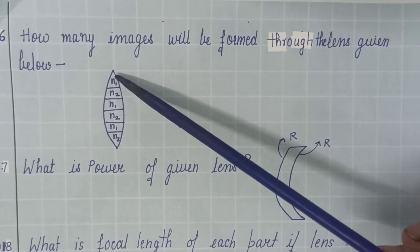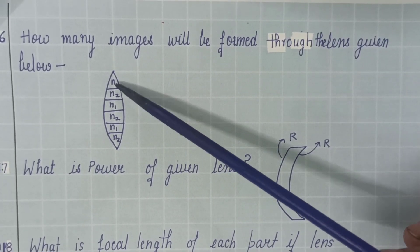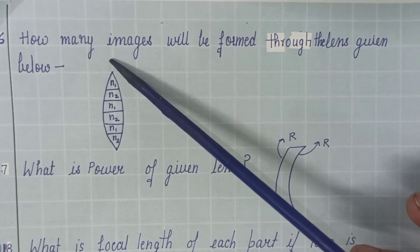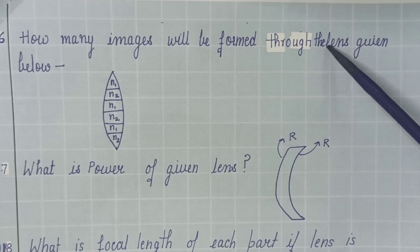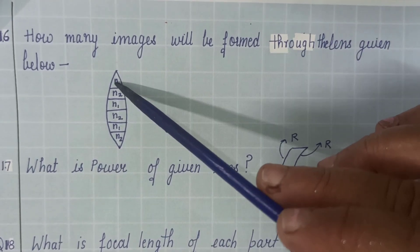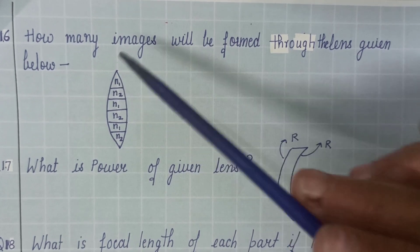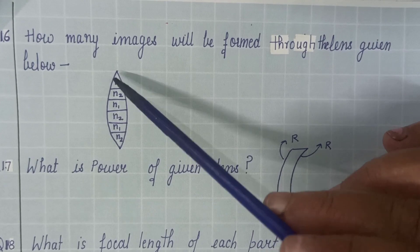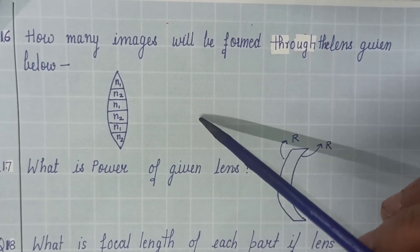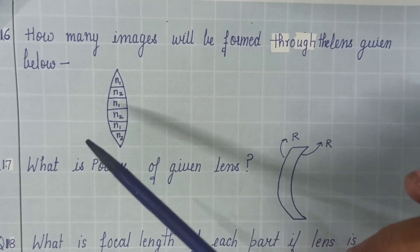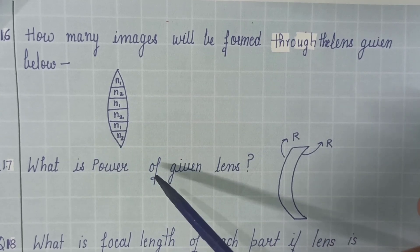Then this question, in which two different refractive index materials are used to manufacture this lens. Question is how many images will be formed through the lens? Here I will discuss the answer also. Because focal length depends upon the refractive index of material and two different materials are used. So this lens will have two different focus. And so, two images will be formed of single object in this case.